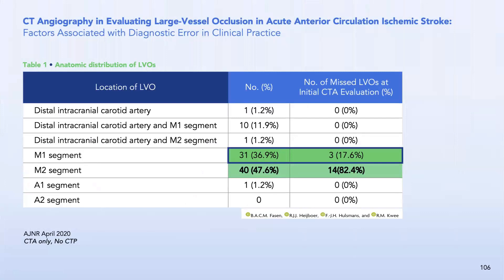Rotating the CTA, the near-occlusive clot in the posterior M2 division becomes visible. At angiography, a near-total occlusion is confirmed with a thin rim of contrast distally. After just one pass with an aspiration catheter, a TICI 3 result was achieved. The patient's aphasia and facial droop resolved; 24-hour follow-up was excellent.